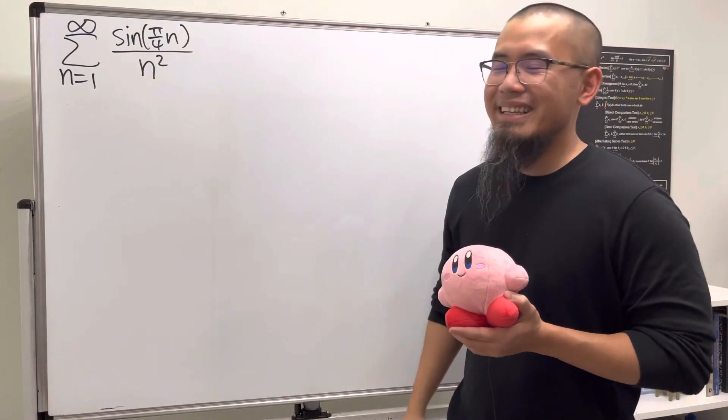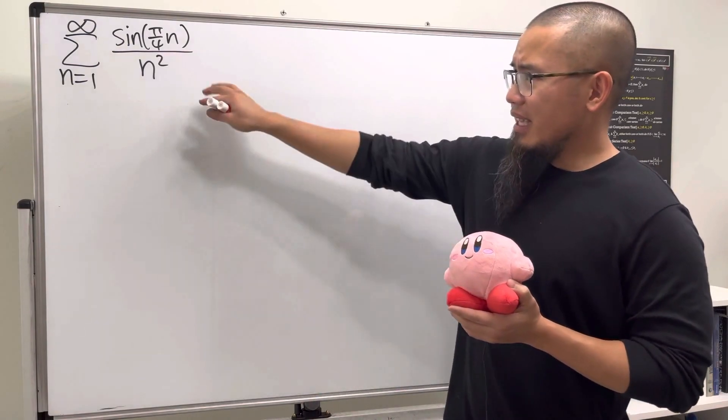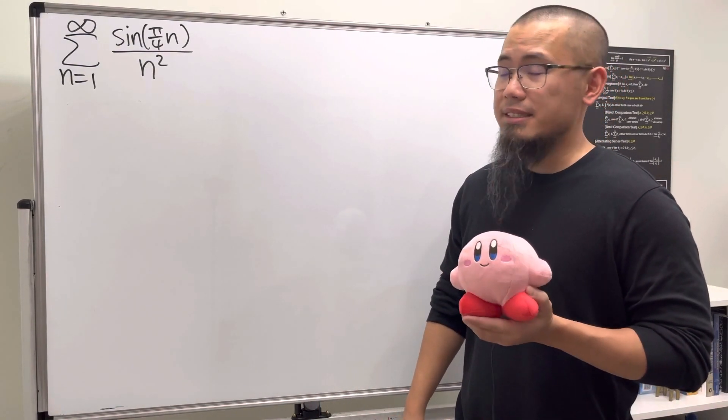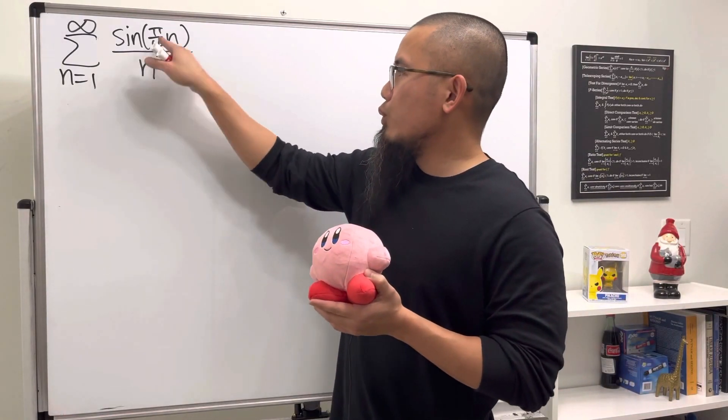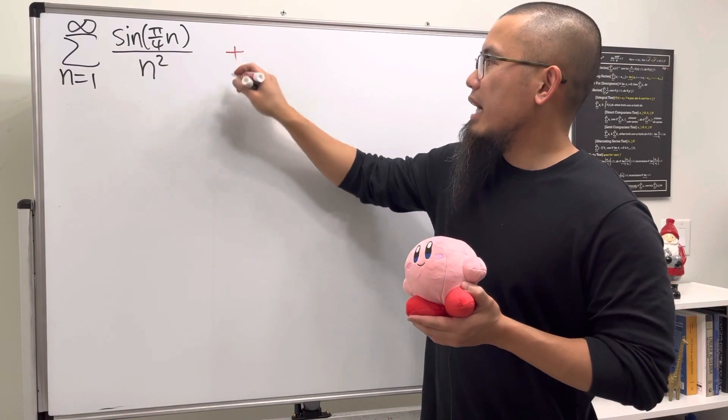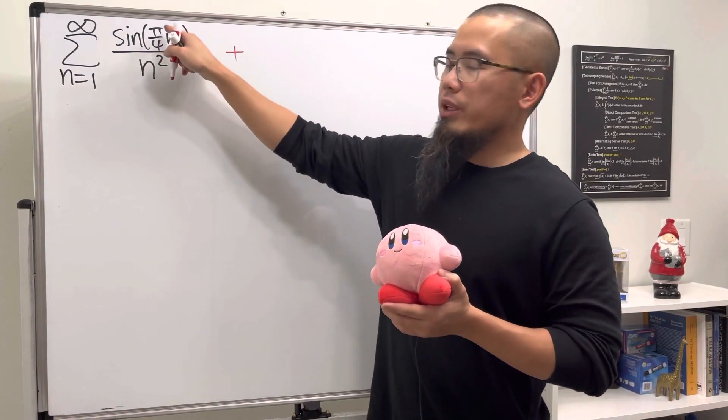You can see this is actually not alternating in the usual sense. If you put n equals 1, we get sine of π/4, that's positive. If we put n equals 2, we get π/2, and sine of π/2 is positive 1.